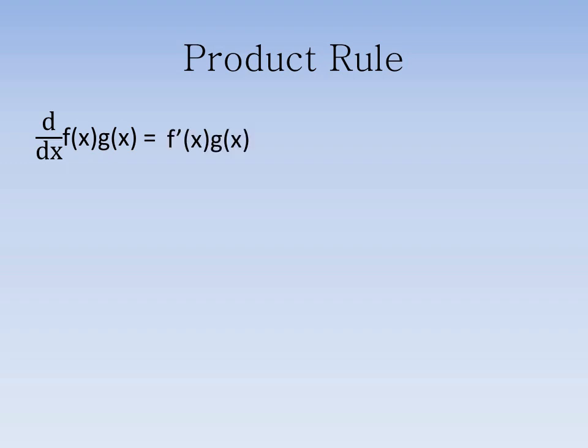We will first find the derivative of f of x, shown by f prime of x, multiplied by the g of x function. We will add to this the derivative of g of x, shown by g prime of x, multiplied by f of x. The sum of these two terms is the derivative.